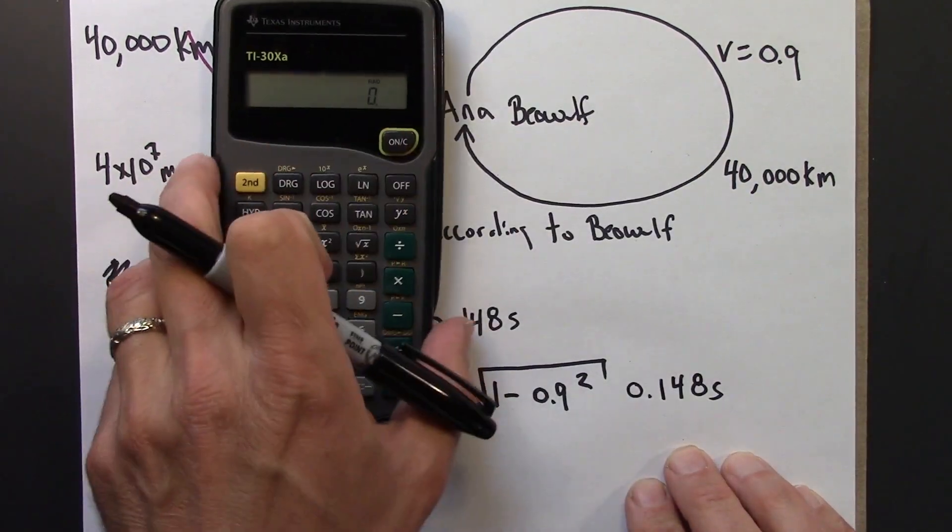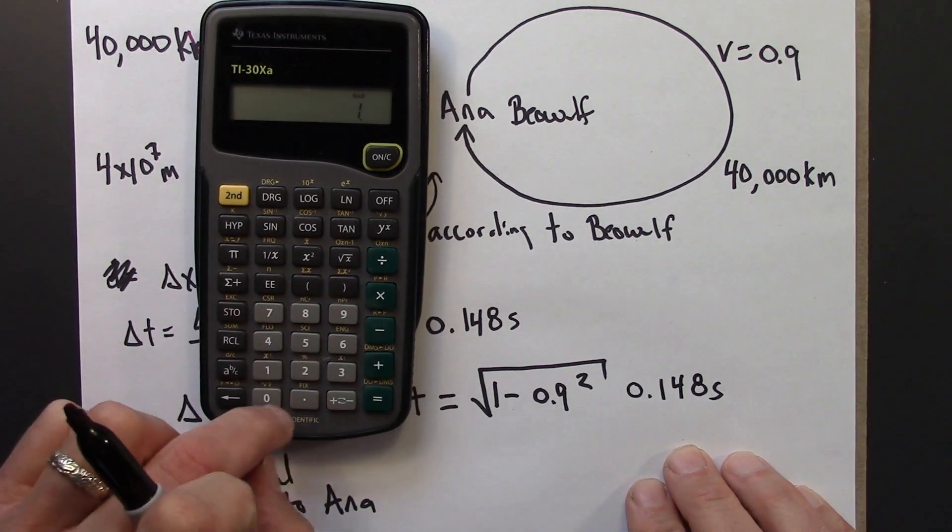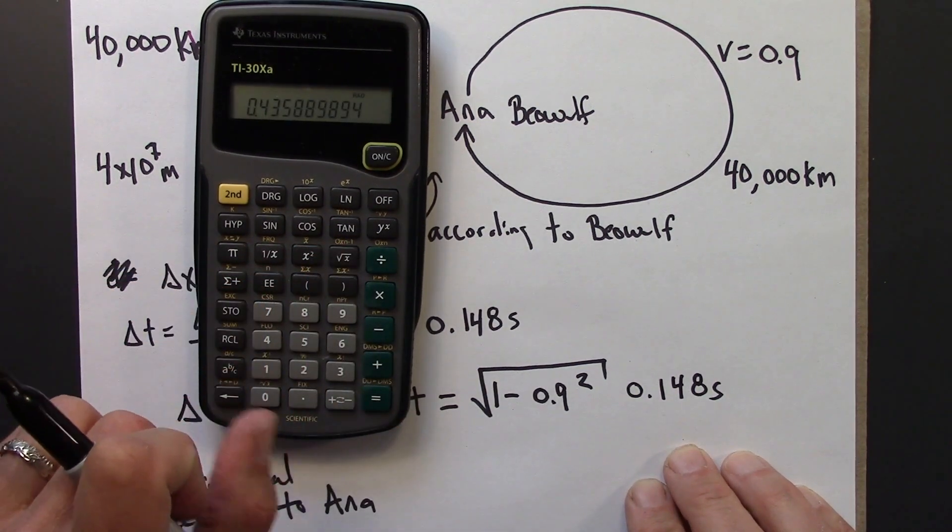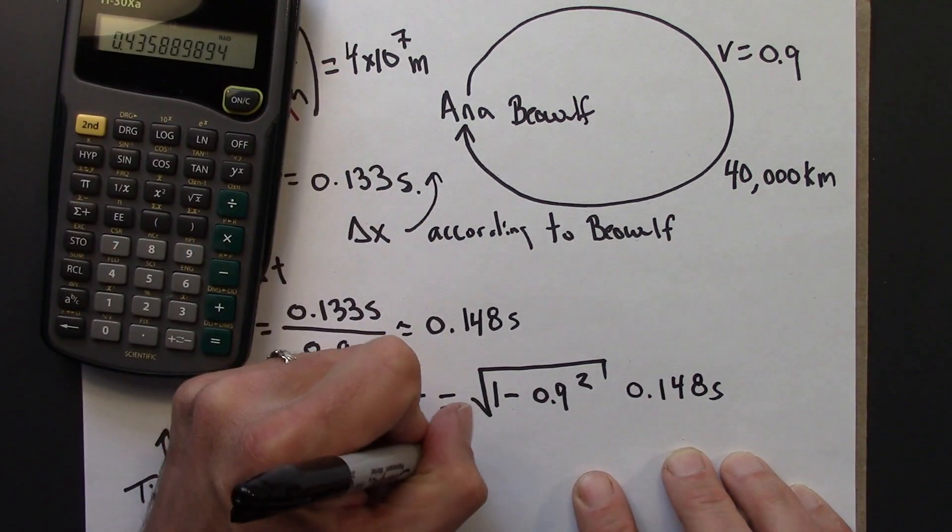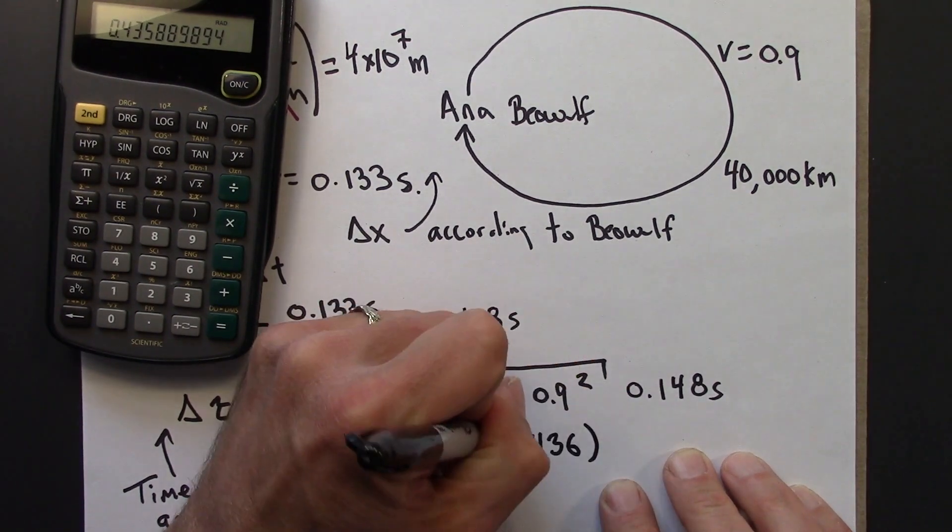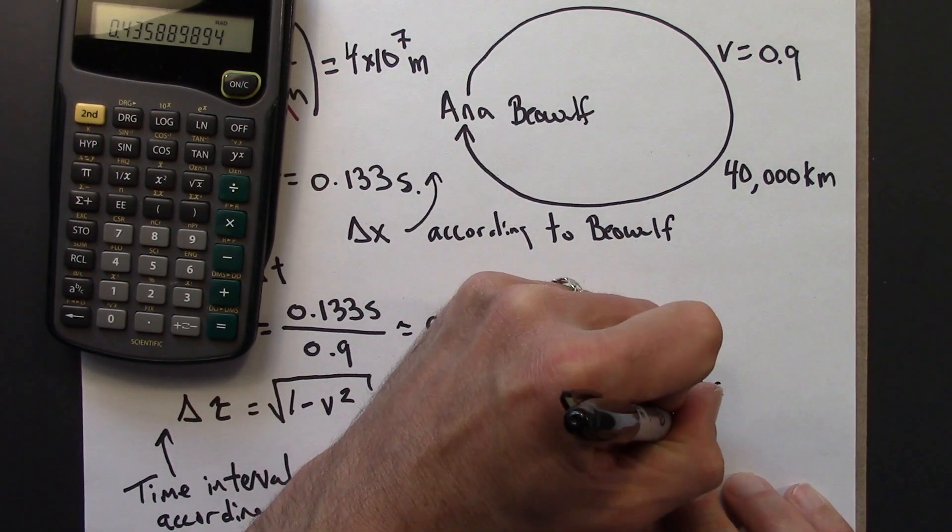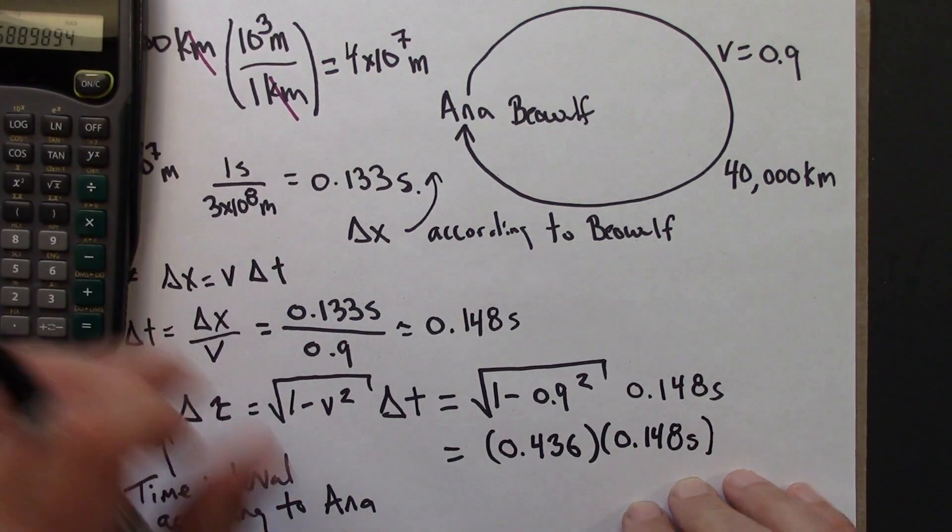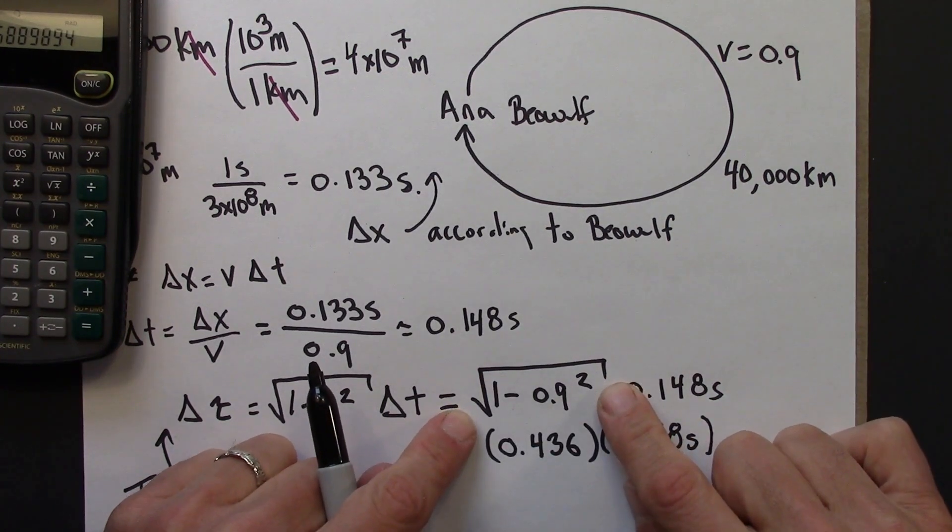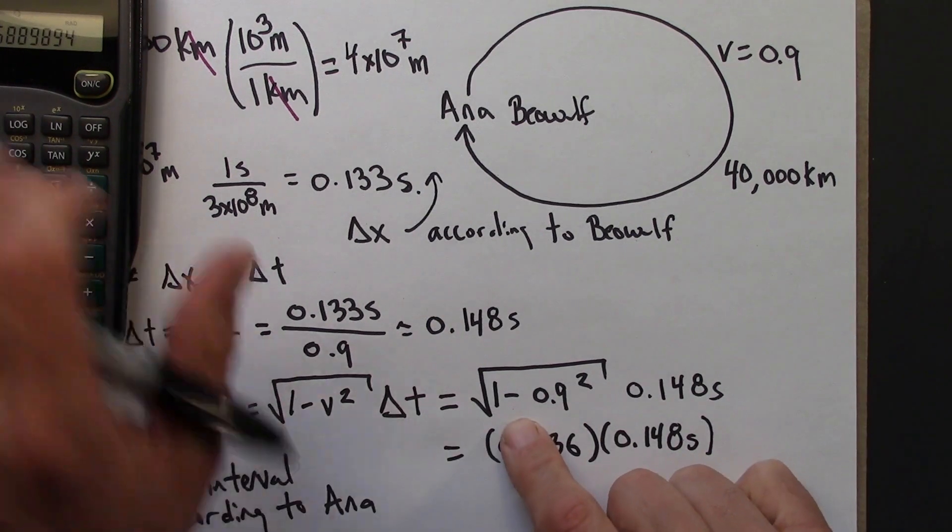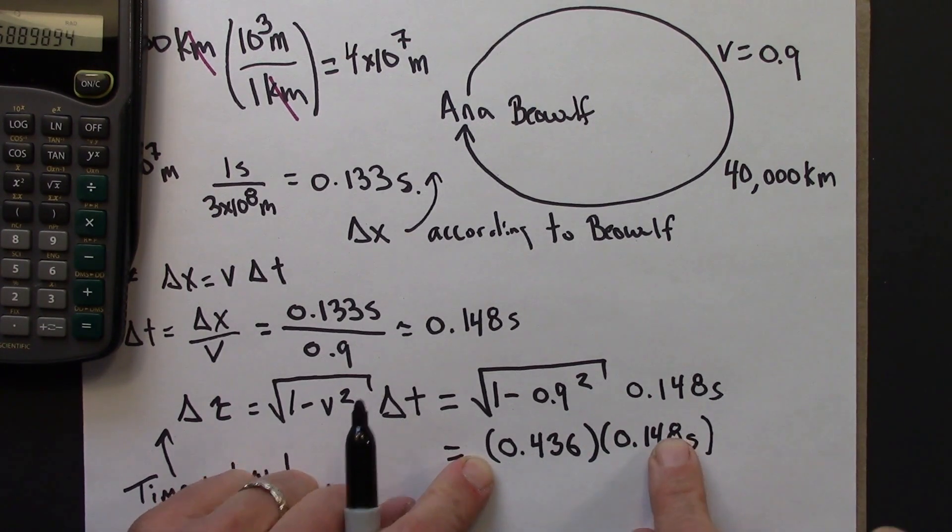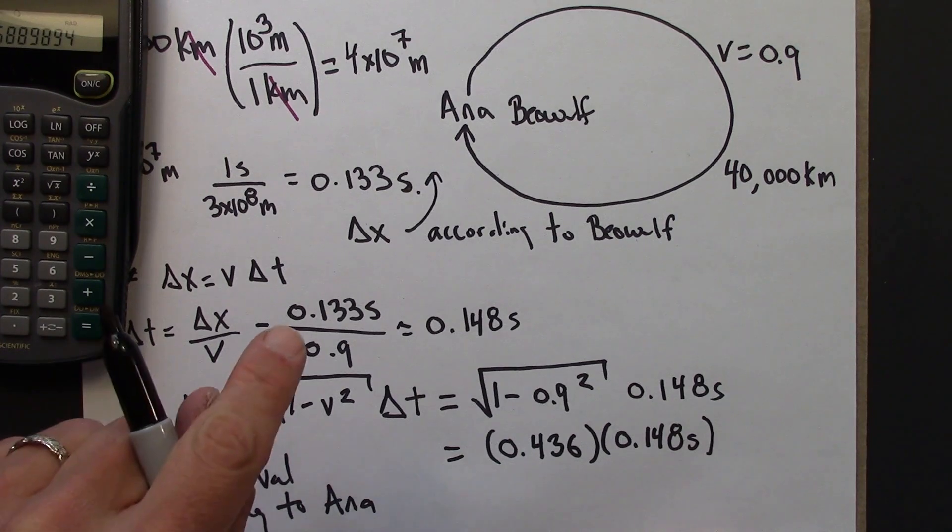Definitely going to need a calculator for that. 1 minus 0.9 squared equals square root: 0.436 times 0.148 seconds. Notice that this number is less than 1. I said in the previous video that this square root thing is always going to be less than 1. So it's always less than 1, which means delta tau is going to be smaller than delta T.